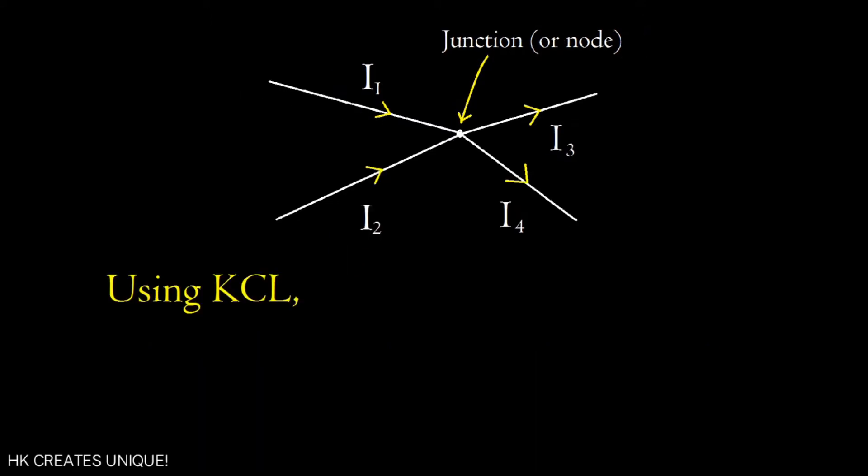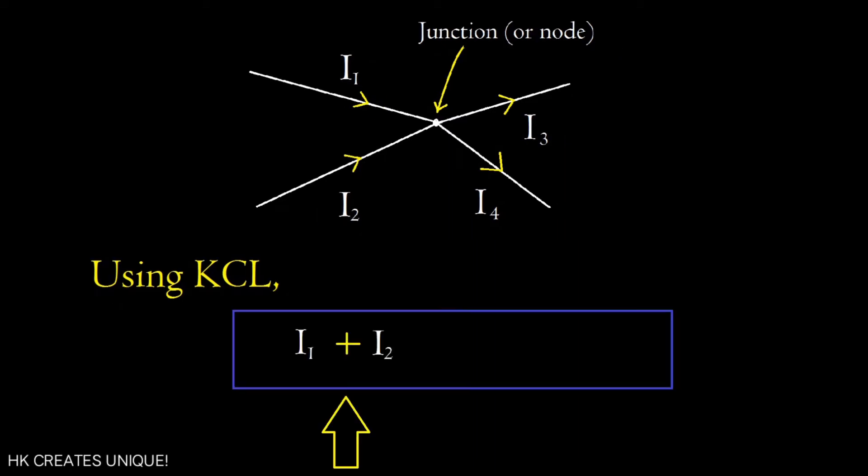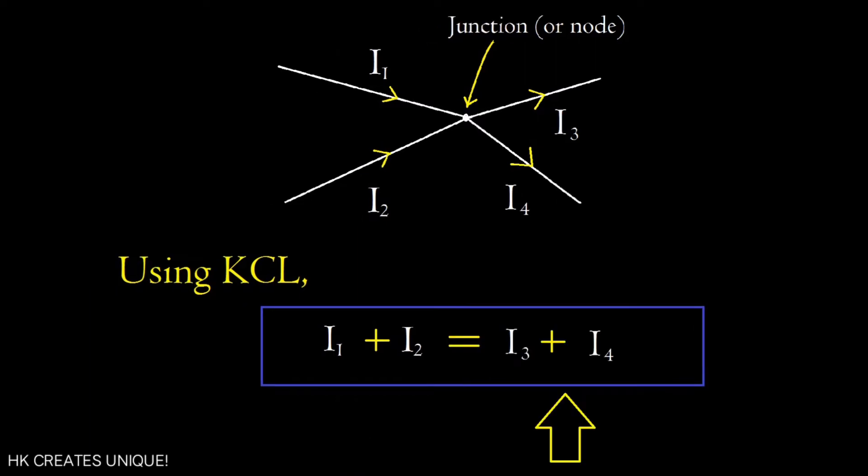Using Kirchhoff's current law, total current entering a junction, that is i1 plus i2, will be equal to the total current leaving the junction, that is i3 plus i4.